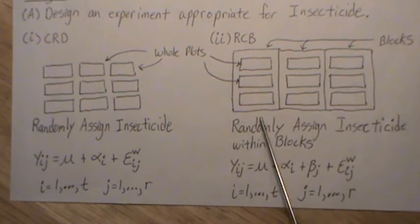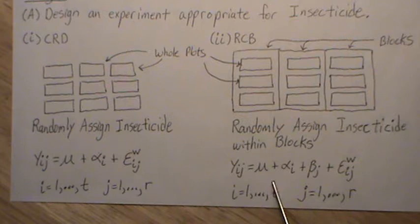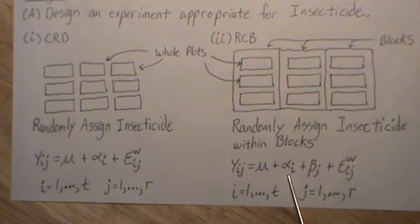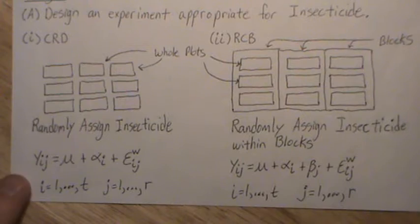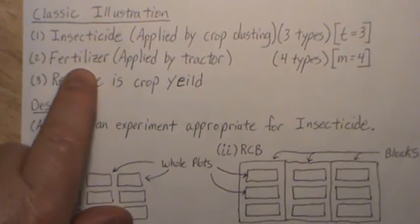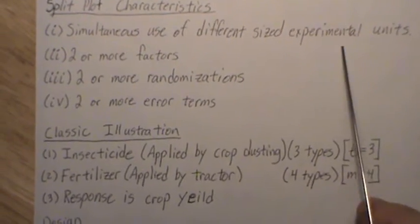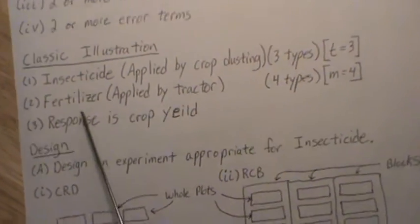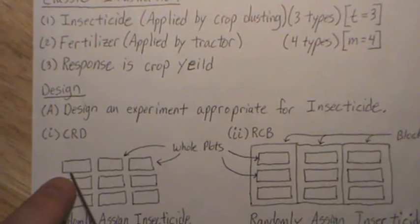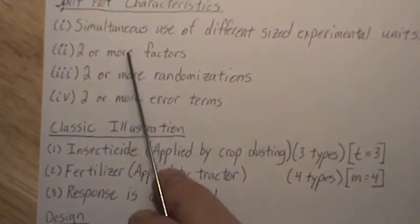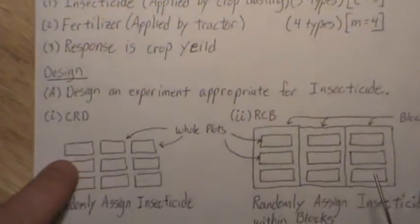If you were to use a block design for the first factor, the model would be y_ij = mu + alpha_i + beta_j + error — a randomized complete block design. Now in the next step, we need to randomize fertilizer within these whole plots. This is what is meant by simultaneous use of different sized experimental units: we split whole plots into smaller pieces, and that smaller piece becomes the experimental unit for fertilizer. There are two randomizations and two error terms.